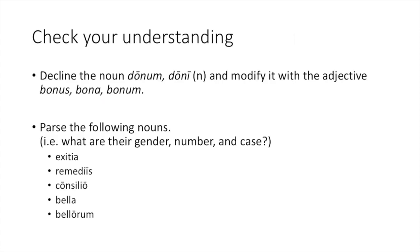Now it's your turn to practice with second declension neuter nouns. First, decline the noun donum, doni, and then modify it with the adjective bonum. After that, parse these five nouns. Once you are complete with this exercise, call me over and I will check your work. Once it's all correct, I will tell you your next task. If you are uncertain about anything, you can call me over, ask questions, or look back at earlier parts of the video.